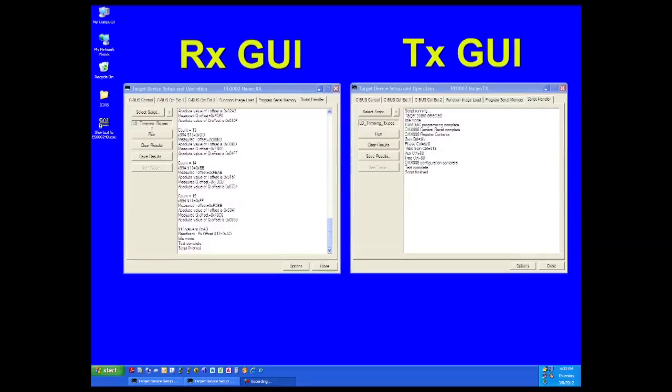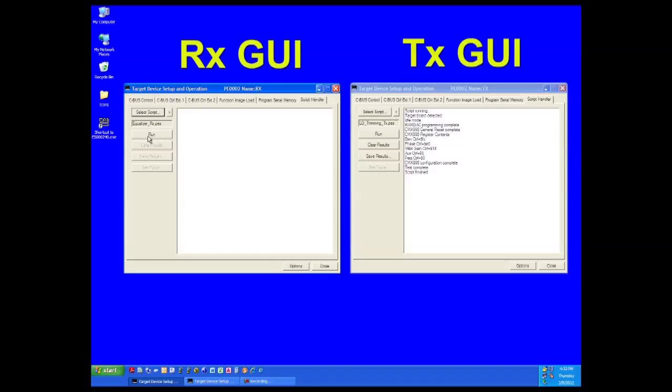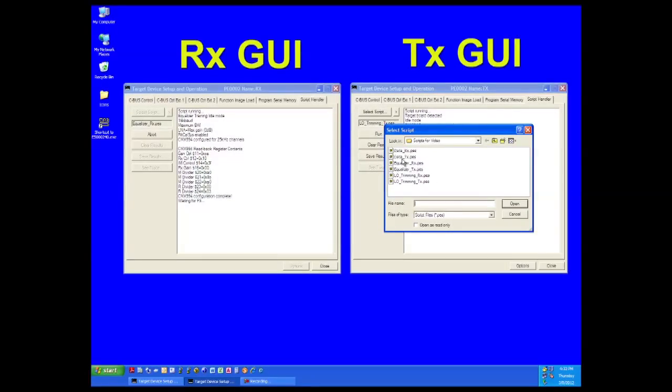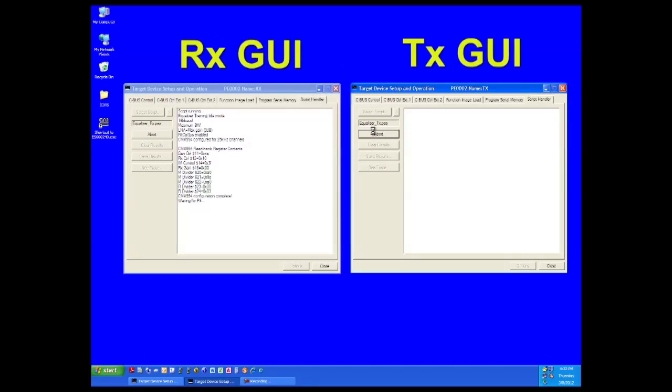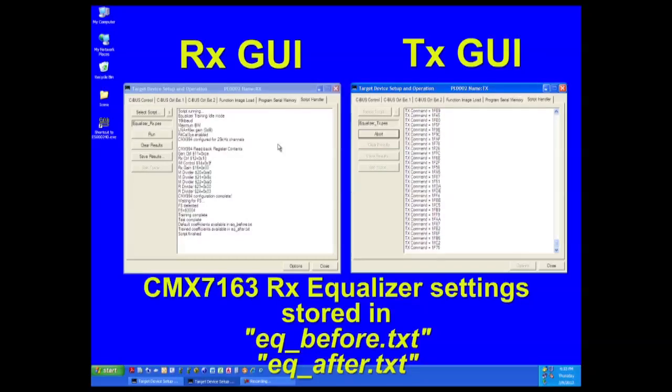Distortion in the received signal can foul the demodulation process. The CMX7163 includes a filter equalization function to help compensate for the distortion. This next script enables the CMX7163 filter equalization function. In the received GUI, find and run the Equalizer RX script. When prompted, go to the transmit GUI and launch the Equalizer TX script. The transmit CMX7163 sends a training pattern to the receiving CMX7163. The receiving device analyzes the training pattern and adjusts its filtering to compensate for distortion. The before and after CMX7163 filter values are written to text files stored in the same directory as the script.